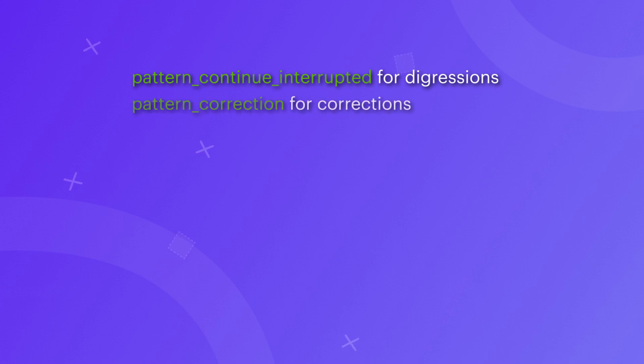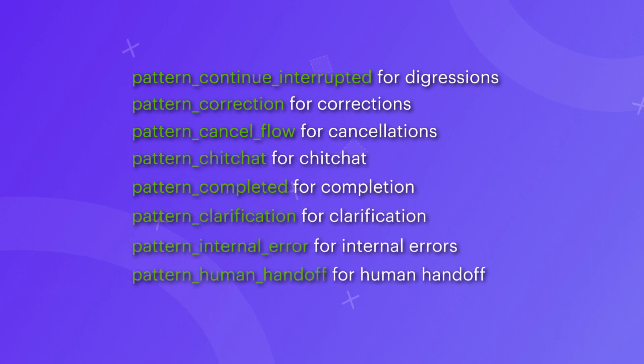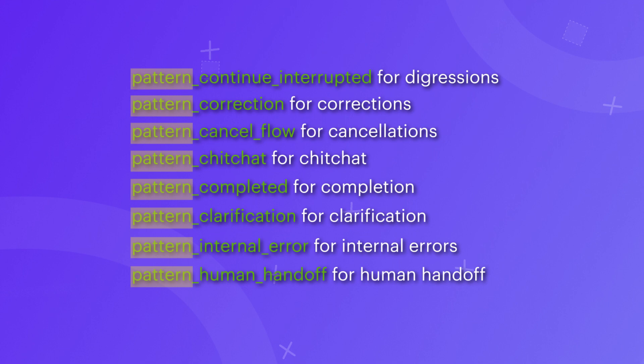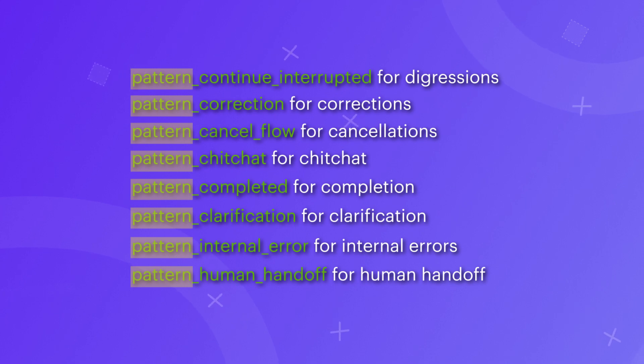All of these conversation repair cases are implemented in Calm out of the box, so you don't have to worry about implementing them yourself from scratch. Here is a list of flows and their corresponding use cases: pattern_continue_interrupted for digressions, pattern_correction for corrections, pattern_cancel_flow for cancellations, and so on. You will notice that conversation repair flow names have a prefix 'pattern' — this is how your assistant knows these are conversation repair specific flows. The details of each flow can be found in the Calm reference documentation.